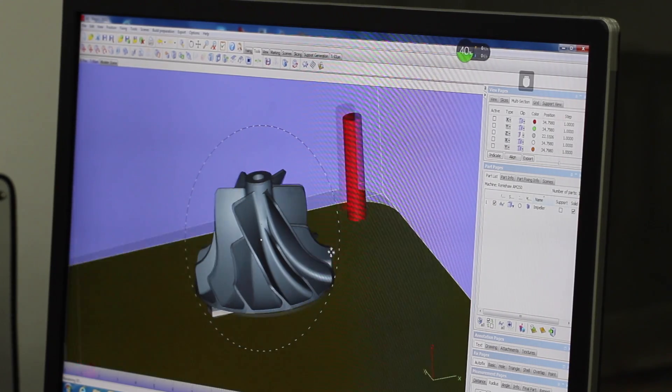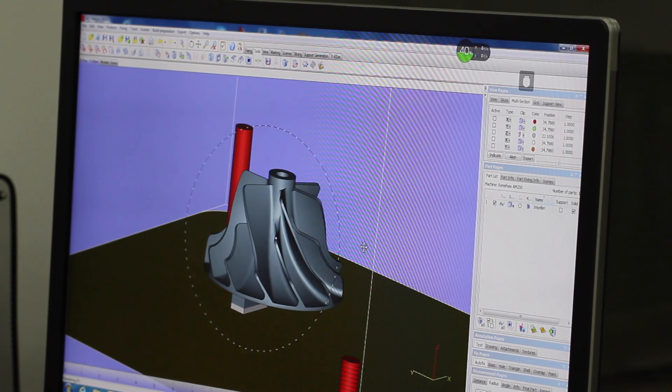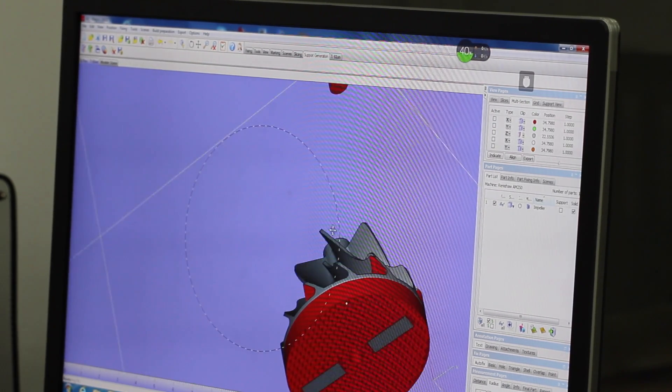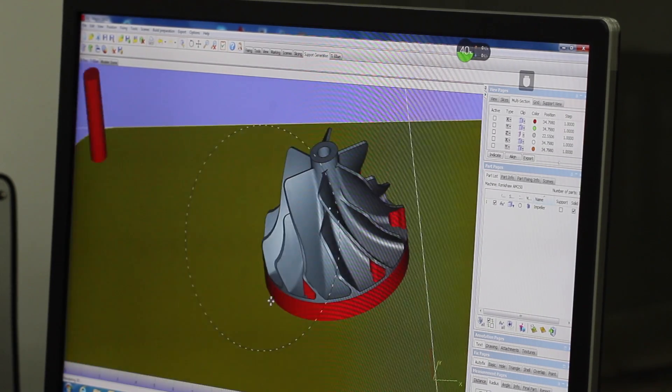The process starts with a three-dimensional CAD drawing file. Our engineers will carefully review the design and add supports that are needed to hold the parts during the build.